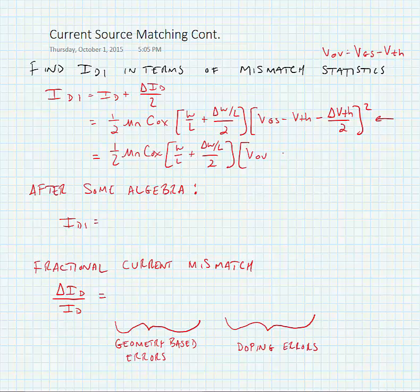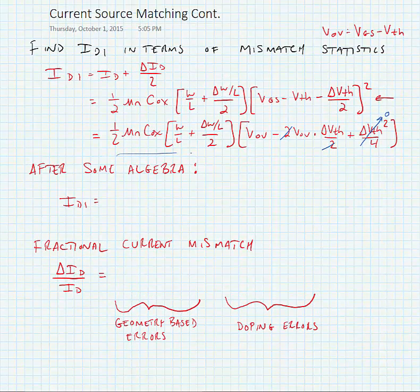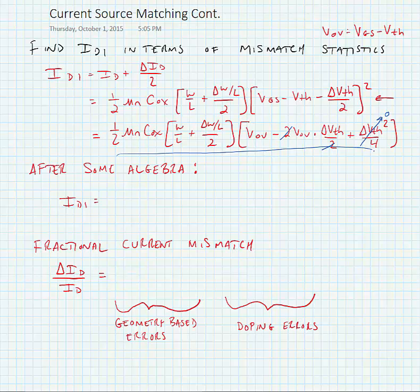Remember VOV is equal to VGS minus VTH. We can cancel those two's out, and we have a delta VTH square term. Now delta VTH is the error in current. Hopefully it's small, so a small number squared is going to be even smaller, so we're going to go ahead and ignore that term. So we're left with the expression here, and again if we do a little bit of further manipulation we would wind up with the following.